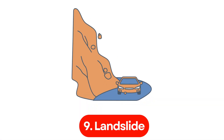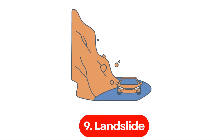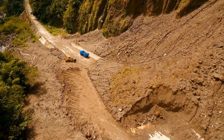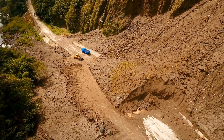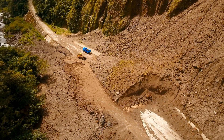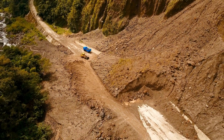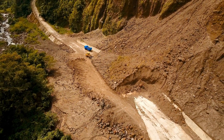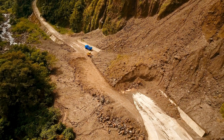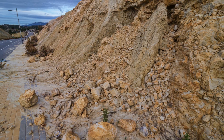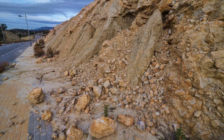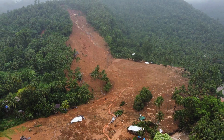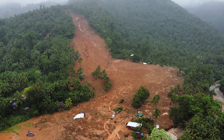Number 9. Landslide. A landslide occurs when a mass of earth, rock, or debris slides down a slope, usually triggered by rainfall, earthquakes, or volcanic activity. It can bury homes, roads, and farmlands.